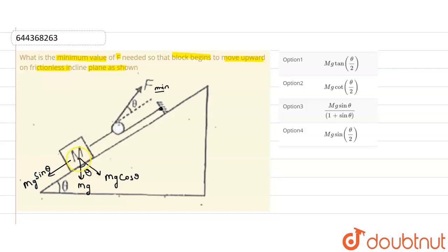This is the free body diagram and we are resolving the force component of weight. So now we can see that in this case, tension will be in this direction, and for this let us suppose this F, this will be F cos theta and this will be F sin theta.